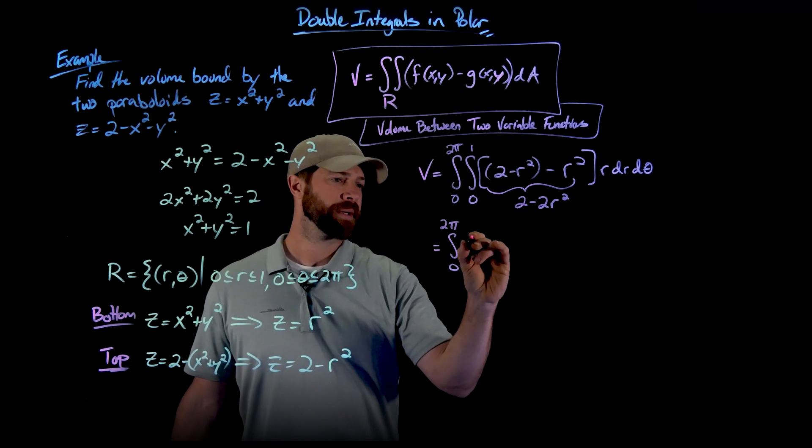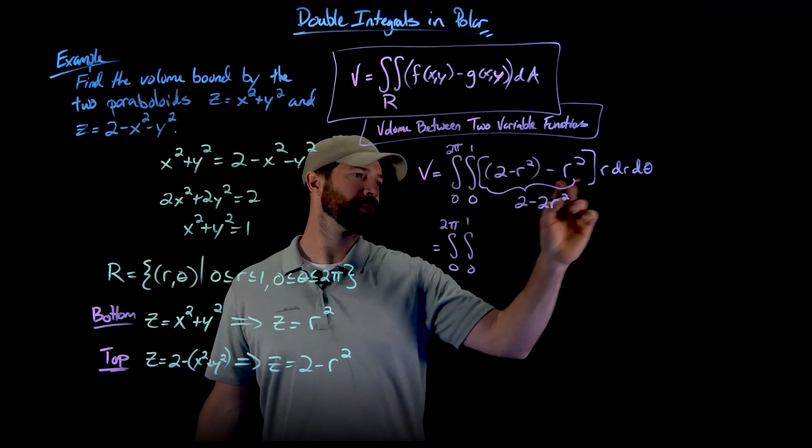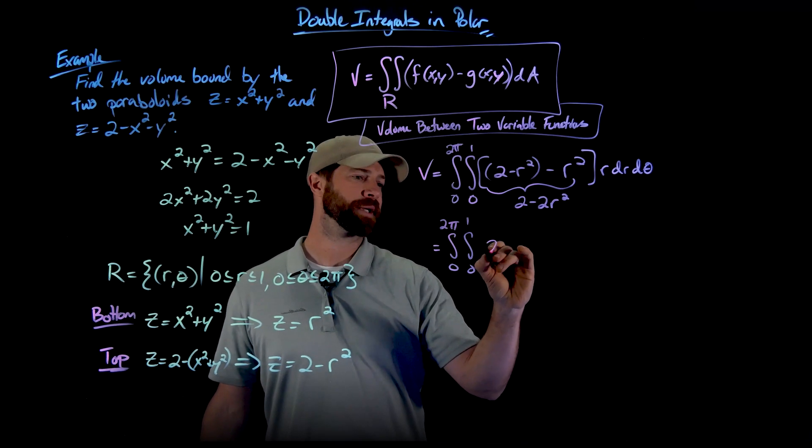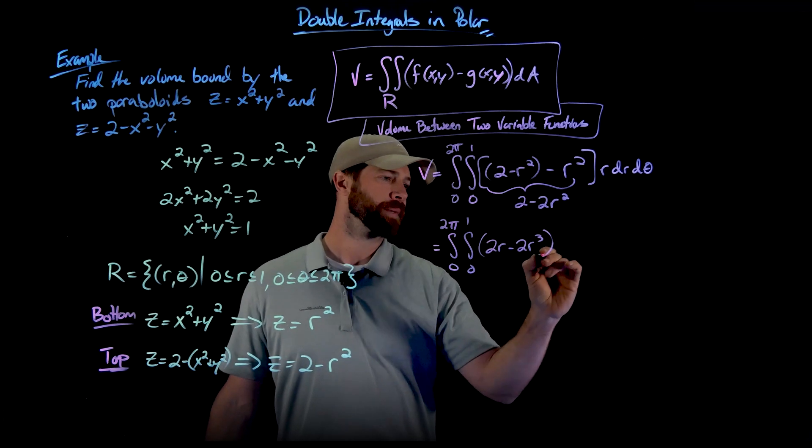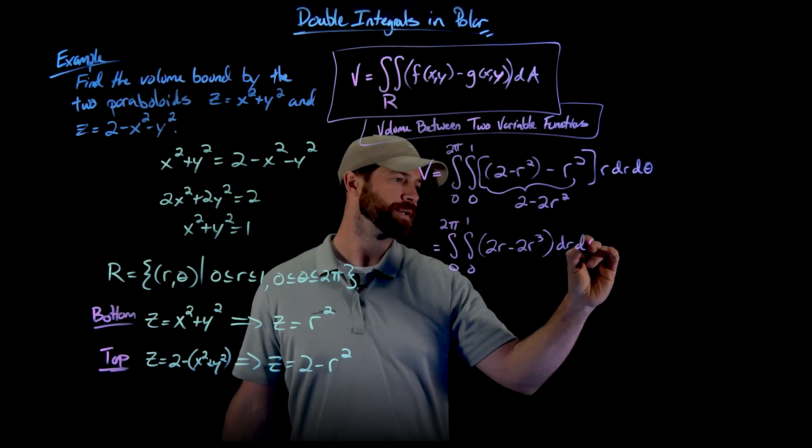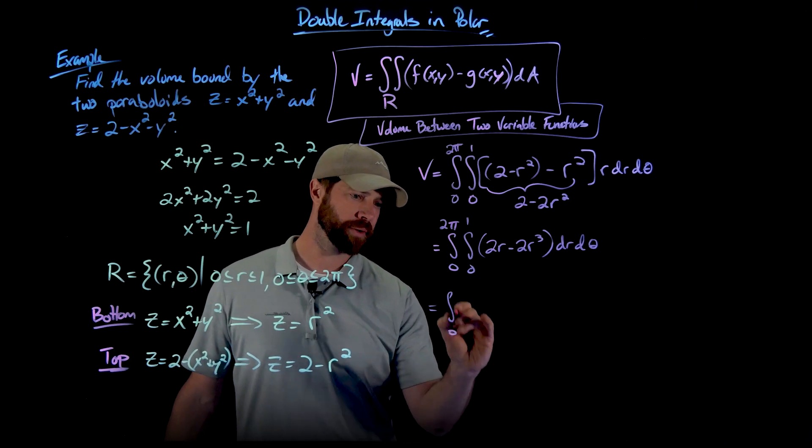So 0 to 2 pi and 0 to 1 for my r values. I'm going to distribute that r through here. So I'm going to get 2r minus 2r cubed. And that's in terms of r first and then theta second. So we can just keep on rocking in the free world.